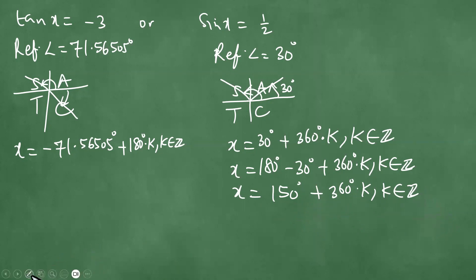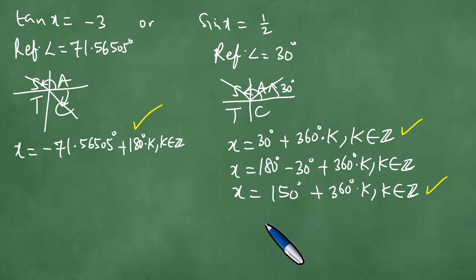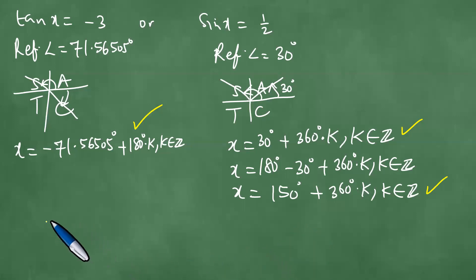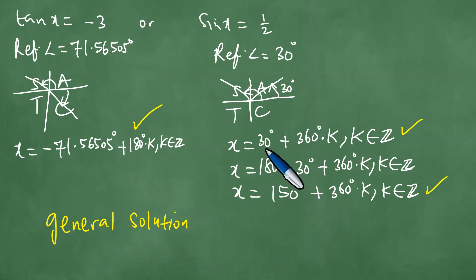So the solutions to the equation are: x = -71.565 degrees plus 180 degrees times k; x = 30 degrees plus 360 degrees times k; and x = 150 degrees plus 360 degrees times k, where k is an integer in each case. We have solved this question in detail. This is called the general solution to the trigonometric equation, because it is expressed in terms of k, which is an integer.